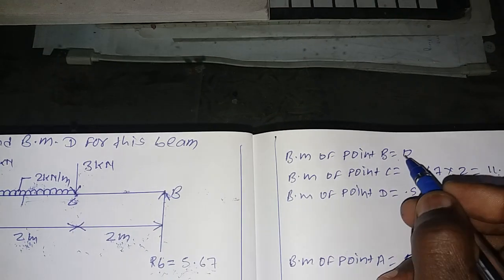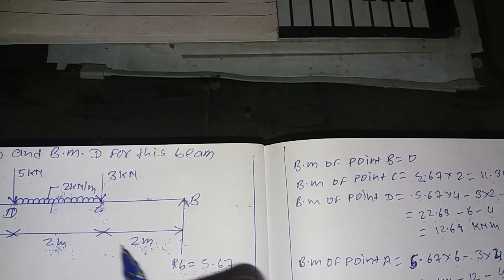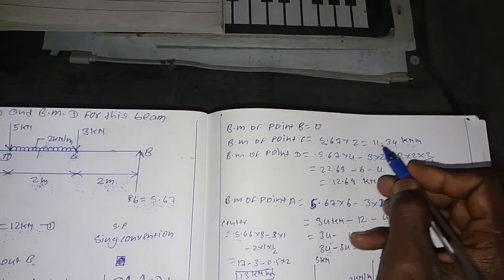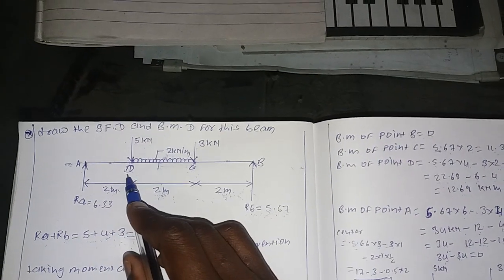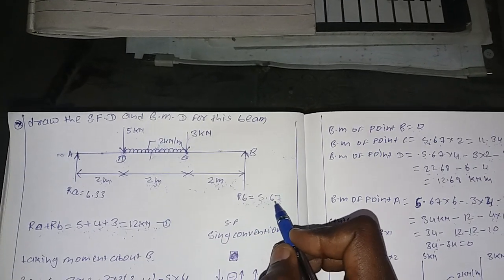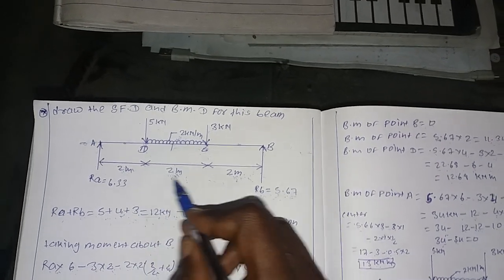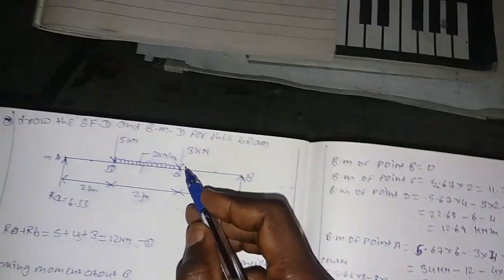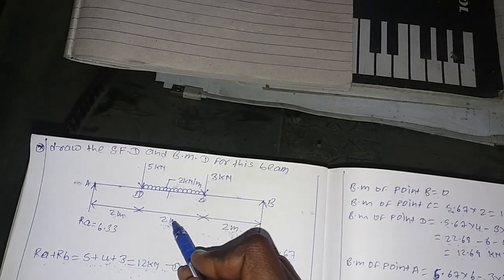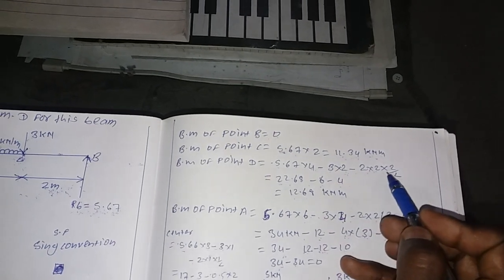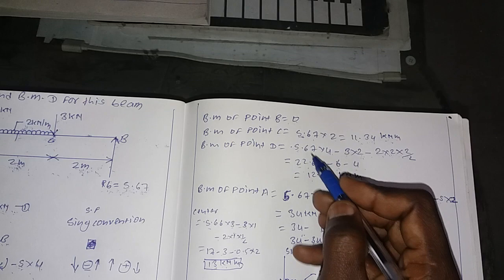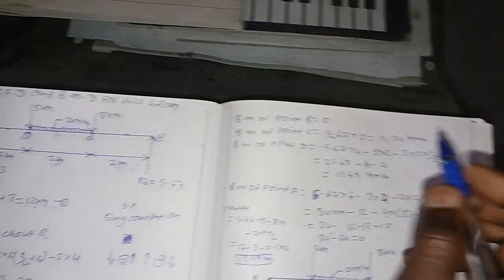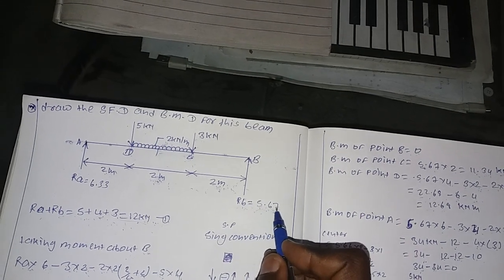Now the bending moment calculations. Bending moment at point B equals 0. Bending moment at point C: reaction load 5.67 into distance from B to C equals 5.67 into 2 equals 11.34 kN·m. Bending moment at point D: 5.67 into 4 minus 3 into 2 minus UDL load into distance squared by half equals 22.68 minus 6 minus 4 equals 12.68 kN·m.